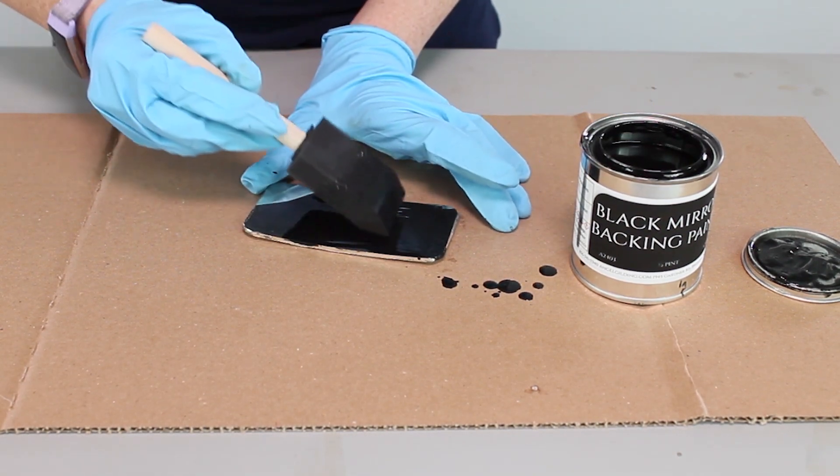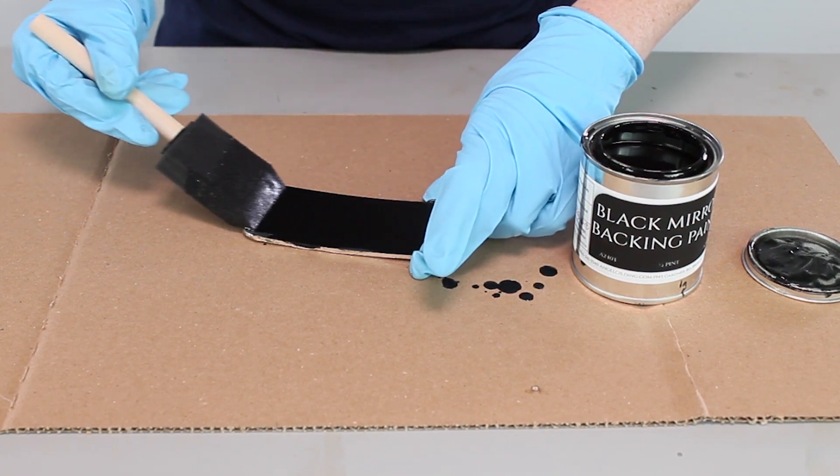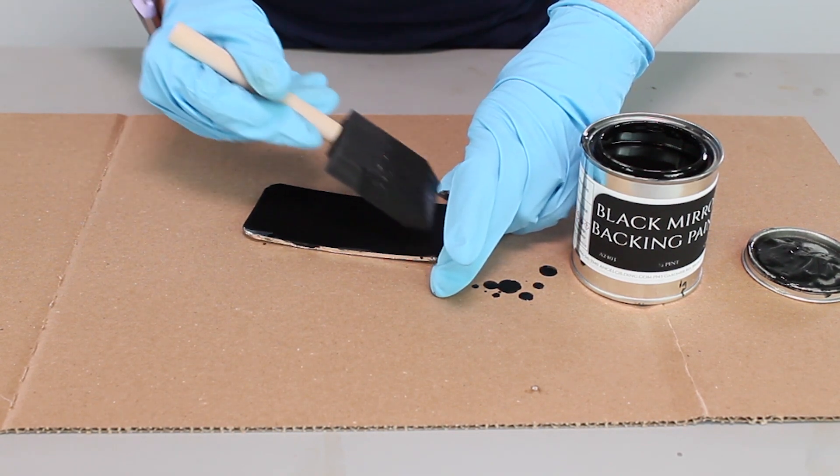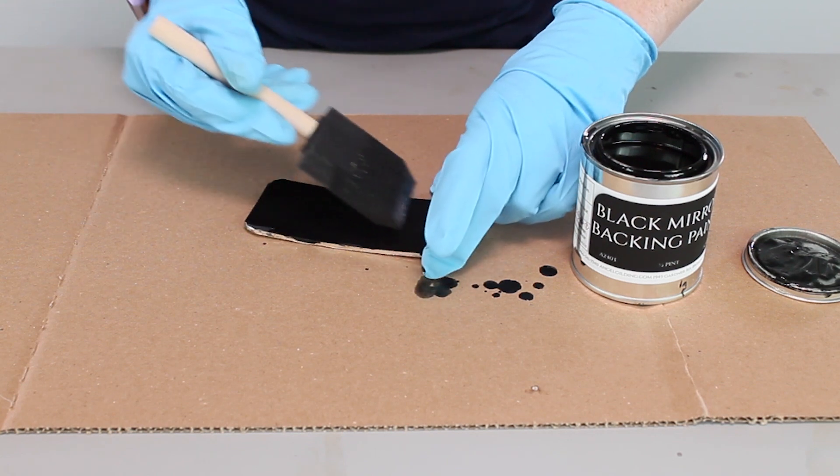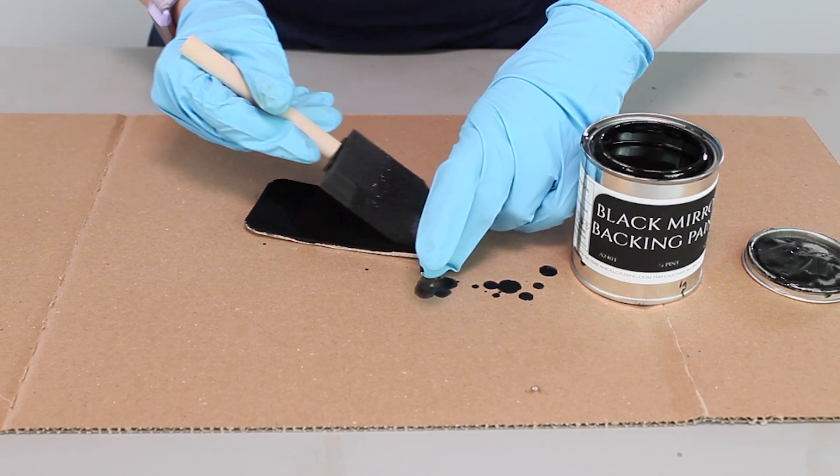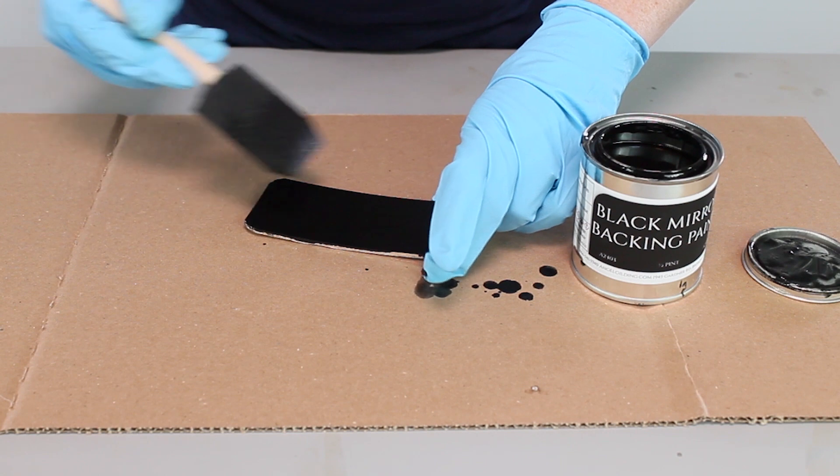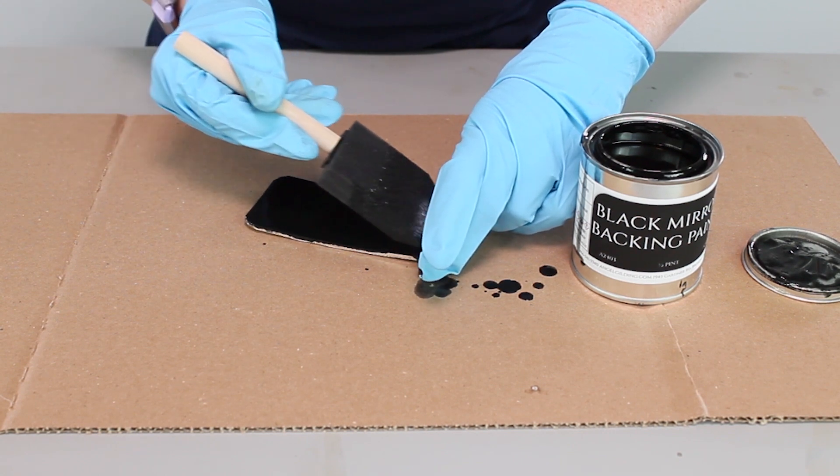Now before worrying about that vinyl on the other side, you're going to want to paint the silver, and that's going to protect it. We're using a really nice foam brush here, but a foam roller is also a really good option.